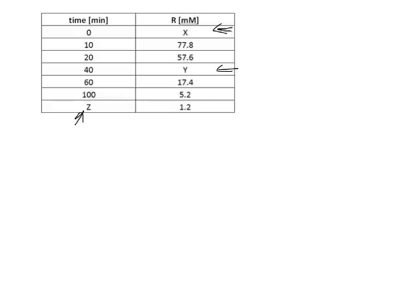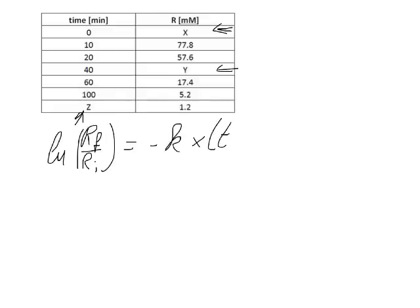First of all, we write down our solved differential equation for a first-order reaction. So this could be: ln(r_final / r_initial) = −k × (t_final − t_initial). That is one form of the solved differential equation where the reactant is consumed — and we can tell it is consumed because it gets smaller and smaller with an increase in time.